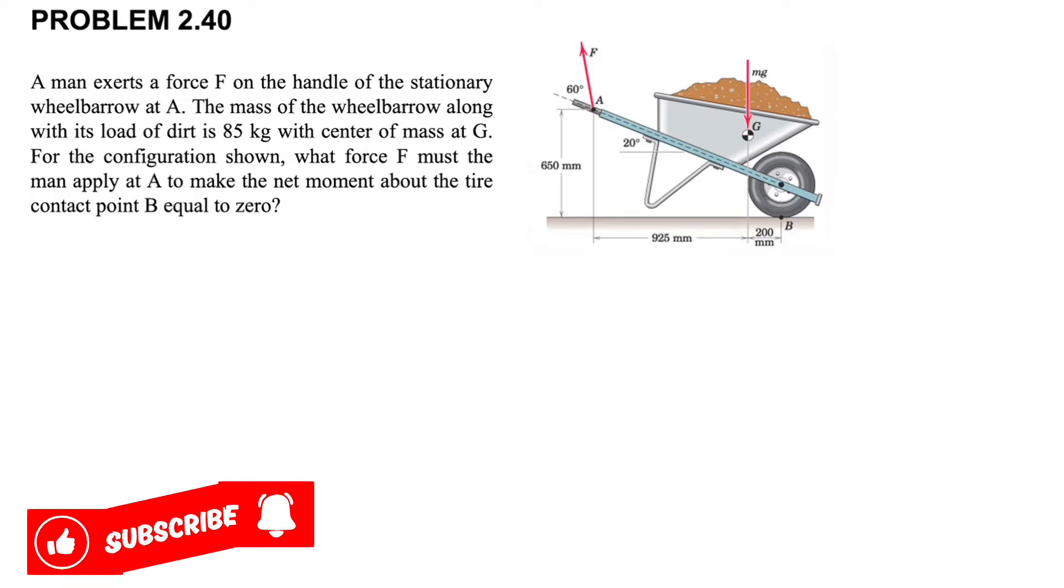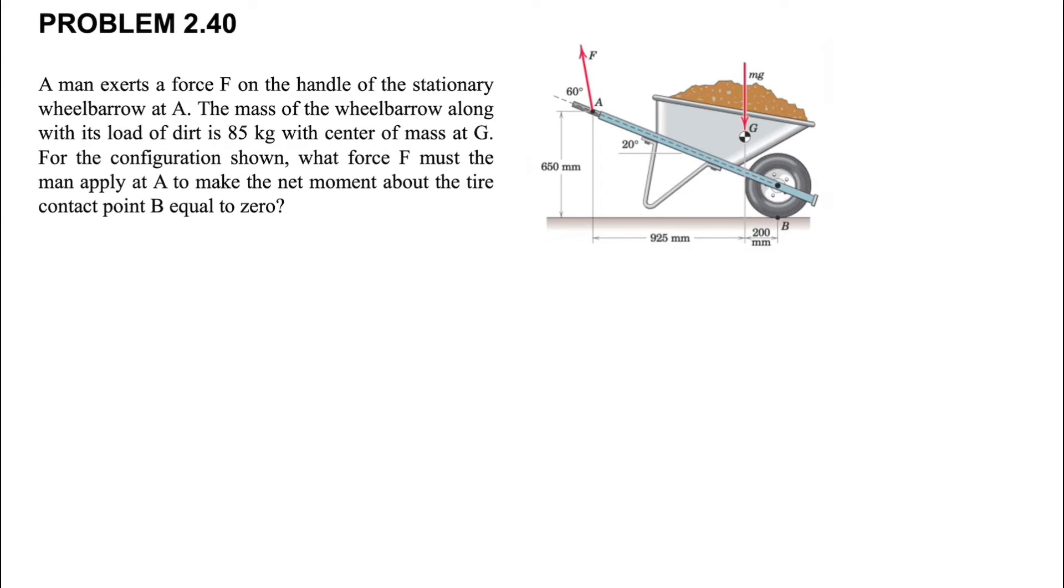The center of mass has been shown at G, and we need to find the force F that the man applied at point A in order to make the net moment about the tire, or point B, equal to zero.